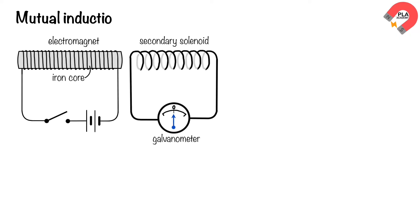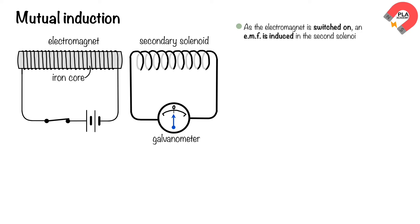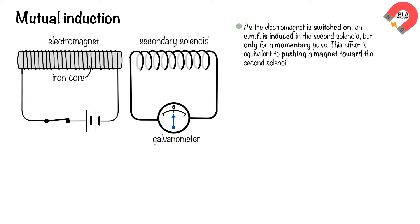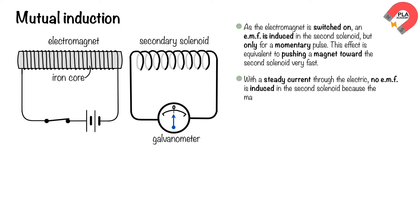Mutual induction. As the electromagnet is switched on, an EMF is induced in the second solenoid, but only for a momentary pulse. This effect is equivalent to pushing a magnet toward the second solenoid very fast. With a steady current through the electromagnet, no EMF is induced in the second solenoid because the magnetic field is not changing.